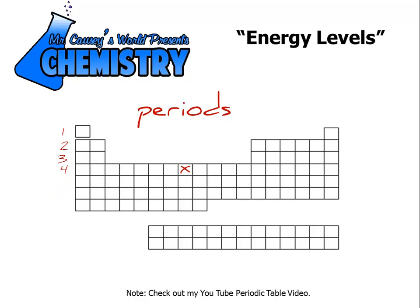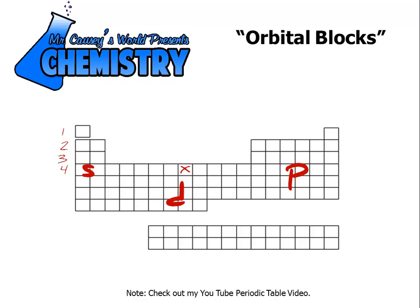Those are with the periods, and then we have our orbital blocks. We're only going to need to deal with the S, the D, and the P's. Even though we have the F's down here, iron doesn't go that far. So we have four energy levels with the S's, the D's, and the P's. The periodic table is completely laid out to match the quantum mechanics configuration. If you're not sure how that works, be sure to go to my YouTube channel and watch the periodic table video.